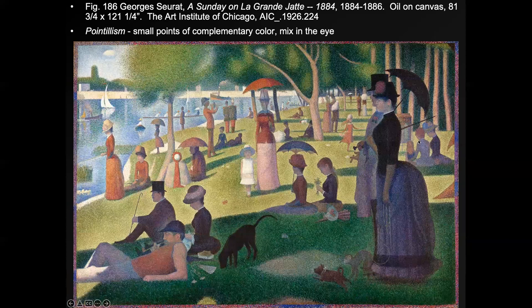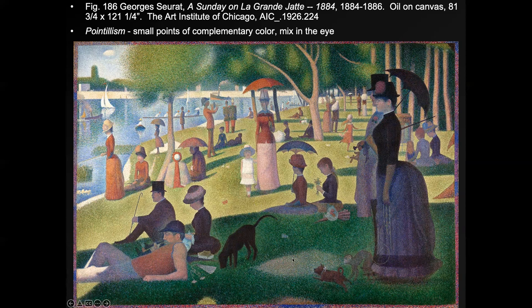Georges Seurat deals with a hypothesis about color in a style that came to be called pointillism — small points of complementary color that mix in the eye. He actually called it divisionism. His idea was that just as you can layer crayons — put yellow and blue together to make green — he would paint tiny dots next to each other with primaries or secondaries on either side of the color he wanted to make. You may or may not think it actually worked this way, but he thought it would make color look more realistic. Perhaps it does, perhaps it doesn't — but it's a very cool effect.